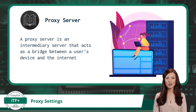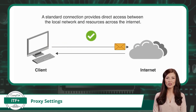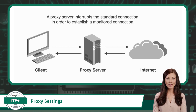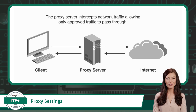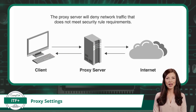Now let's take a closer look at a proxy server in action. A standard connection provides direct access between the local network and resources across the internet. A proxy server interrupts the standard connection in order to establish a monitored connection. That is why we can refer to it as a middleman. The proxy server can then intercept network traffic, allowing only approved traffic to pass through. Security rules that permit traffic can be applied to requests leaving the network or to responses entering the network. Conversely, the proxy server will deny network traffic that does not meet any security rule requirements.